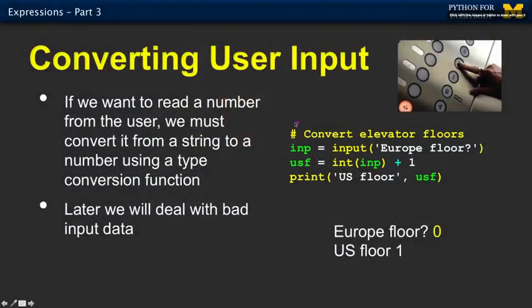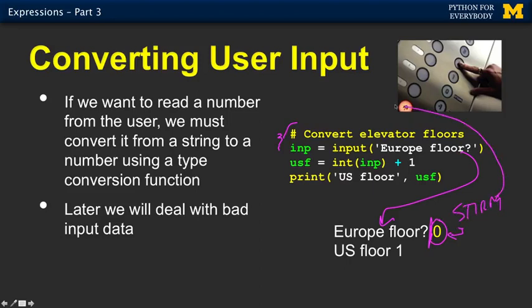So let's take a look at it. A comment, convert elevator floors. That has nothing to do with Python. It has to do with you or me reading about this. Then input. Well, remember input prints out the prompt, and then pauses and waits. And then we type, and then we type the enter key, right? And then this zero, this is a string. This string ends up being input in the variable inp. And then it continues to the next line.